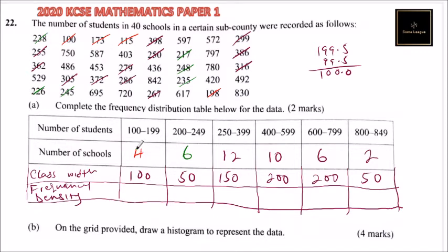Frequency density, we divide the number of schools or frequency divided by the class width. So 4 divided by 100 will give you 0.04. This will give you 0.12, that is 6 divided by 50. This will give you 12 divided by 150, you'll get 0.08. Here you get 0.05, here you get 0.03, and here you get 0.04. So that is the frequency density.